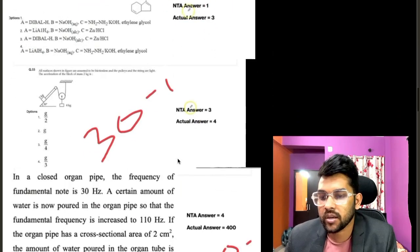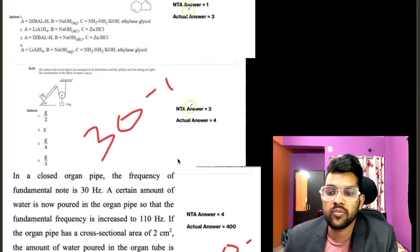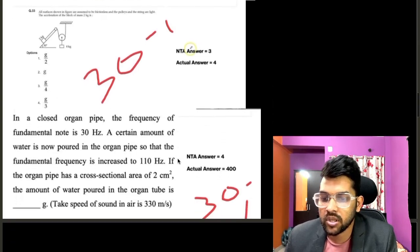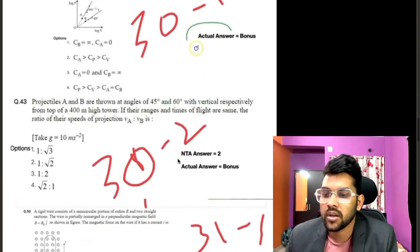Now if you go to 30th January first shift, then there are three questions. One is having bonus, two are error.